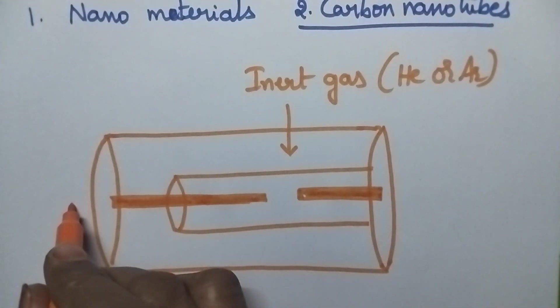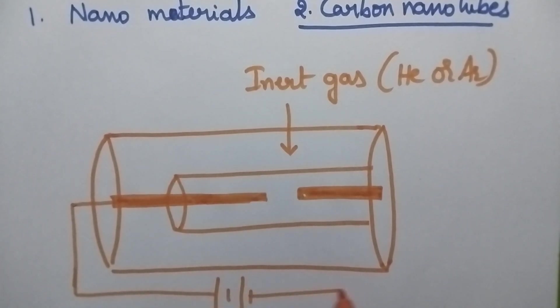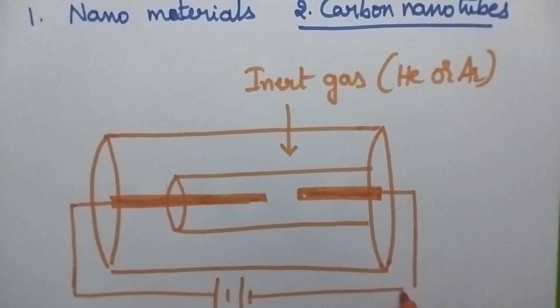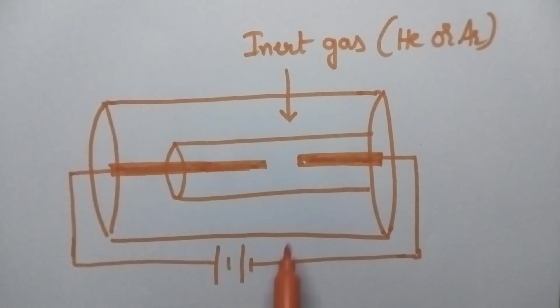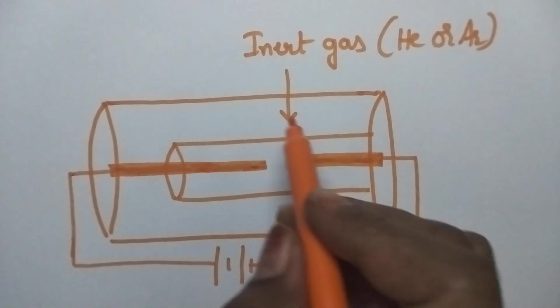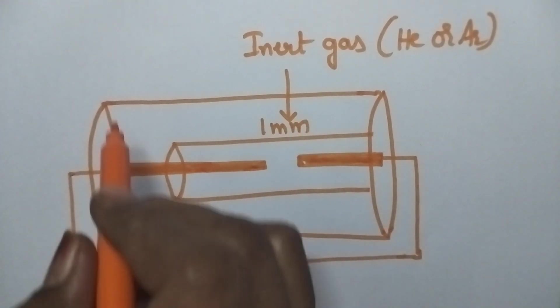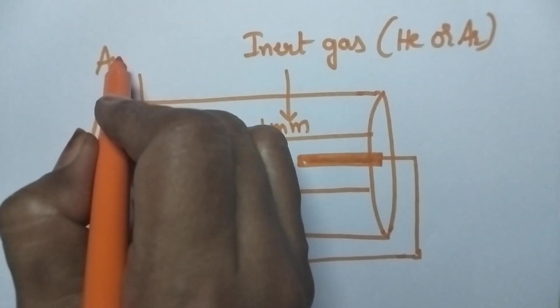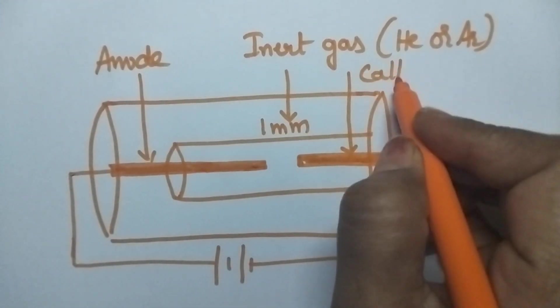These two rods are connected to a battery. In the vacuum chamber filled with inert gas like helium or argon, two carbon rods are placed 1mm apart. One carbon rod acts as the anode and the other acts as the cathode.